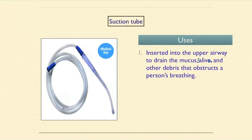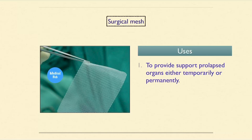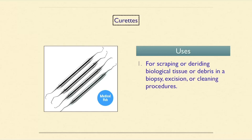The surgical hook is used to grasp, move, and sometimes remove various types of tissues or objects like an IUD. Surgical mesh is used to provide support for prolapsed organs, either temporarily or permanently. The curette is used for scraping or debriding biological tissue or debris in biopsy, excision, or cleaning procedures.